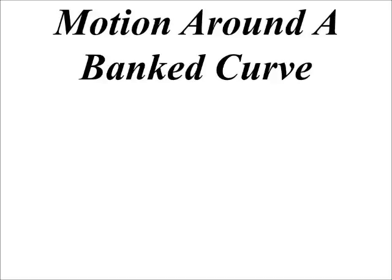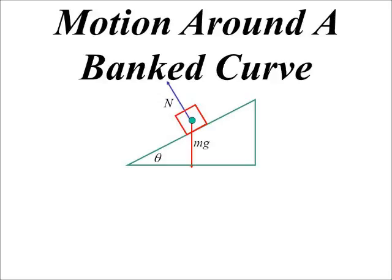Let's have a look at the forces in play on a banked curve. Here's the cross section of our vehicle — call it Bob — on the banked curve. The curve makes some angle with the horizontal. Two forces are acting on Bob: the force due to gravity, and whenever you're in contact with a surface, there's a normal force at right angles to the surface.